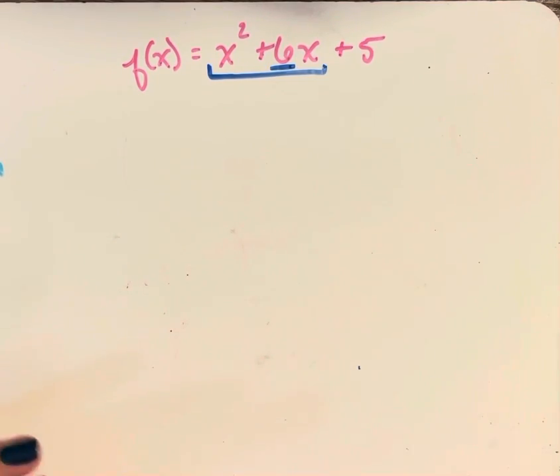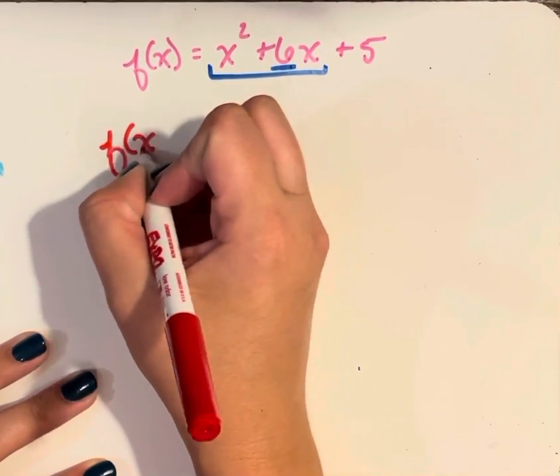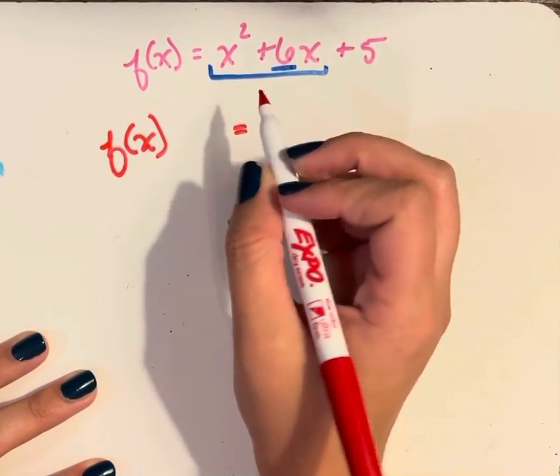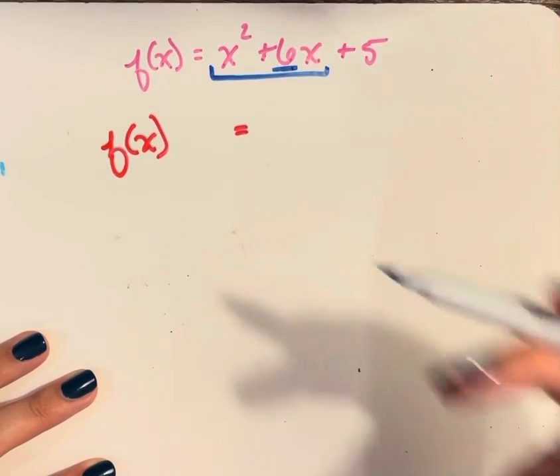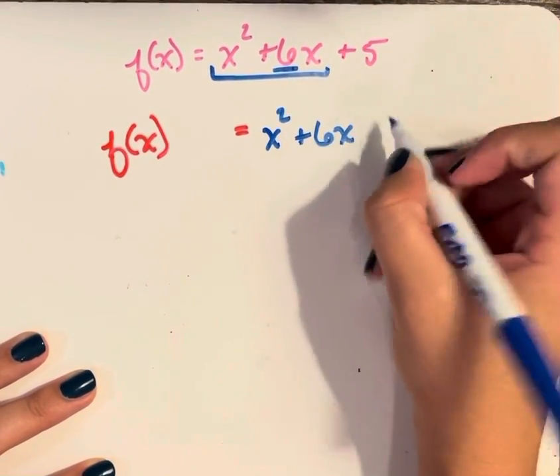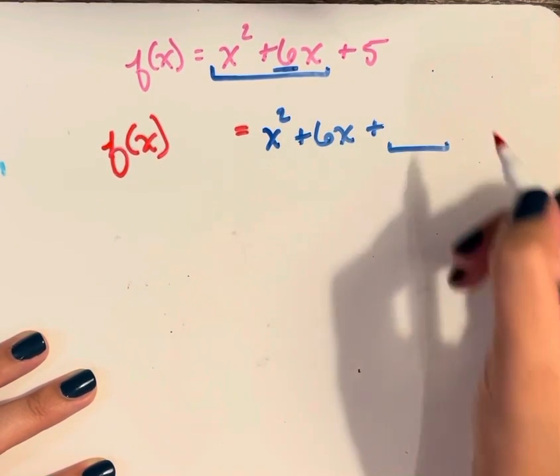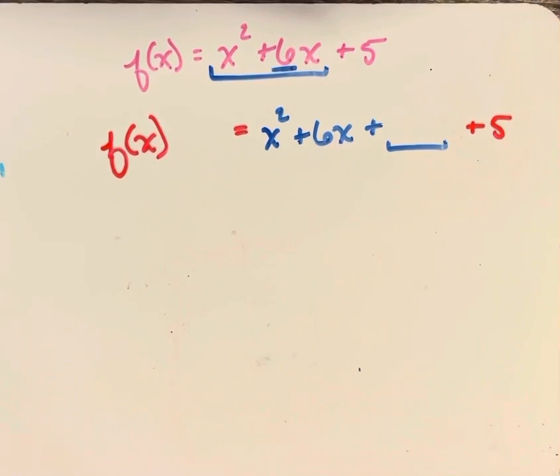So this will look like f of x equals, now this trinomial is going to be x squared plus 6x plus something to be determined, and then I still have this plus 5 out here.